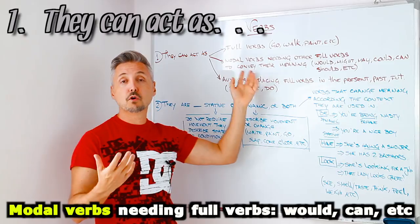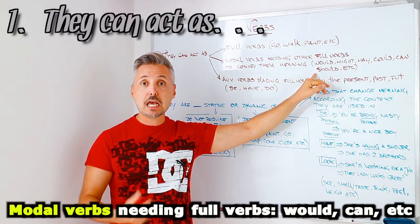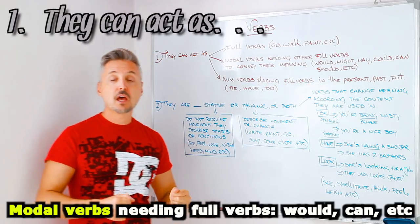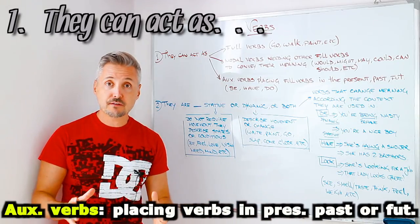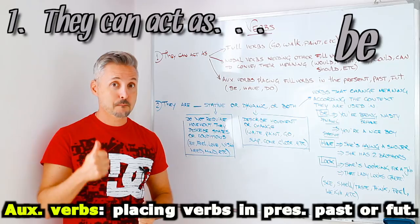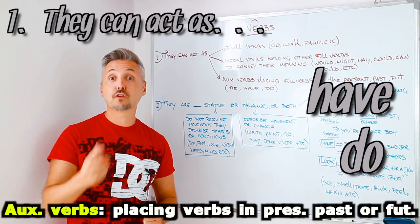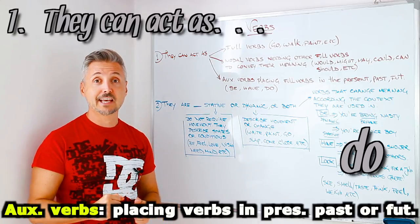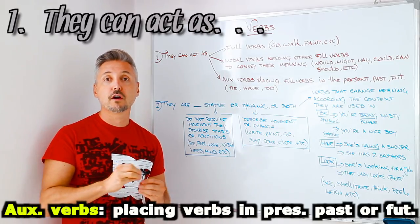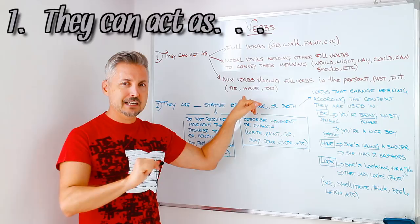So, modal verbs can be like would, might, may, could, should, etc. They can also act as auxiliary verbs. And you know the main auxiliary verbs. They are be, have, and do. They also need full verbs or main verbs in this case to place them in the present or in the past or in the future. So, we're going to look at this in a minute.